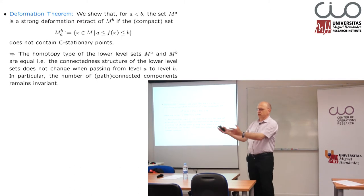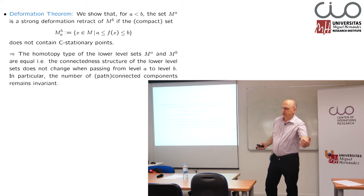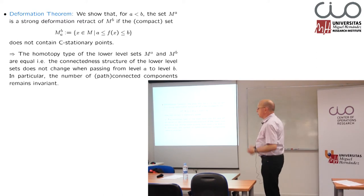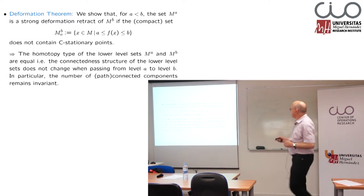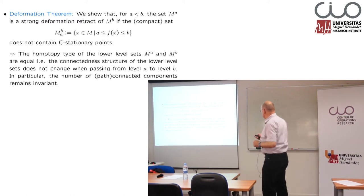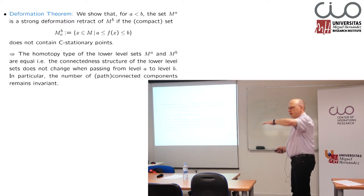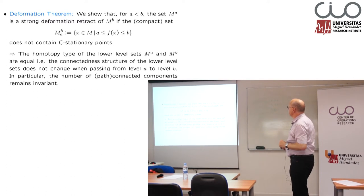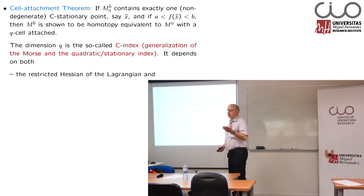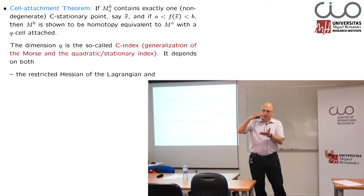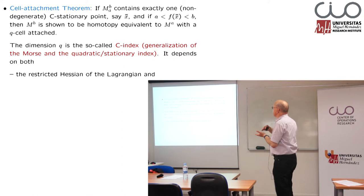So this was the case if we are going from M_A to M_B without having a C stationary point. And the question is: what happens if we have a C stationary point? Then the topological structure is changing. We will see how it will be changed.